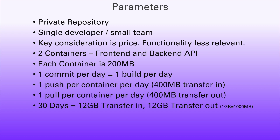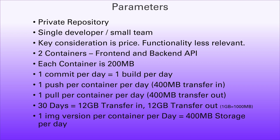Assuming a 30-day period, that gives us 12 gigabytes of transfer in and 12 gigabytes of transfer out — 30 times 400 megabytes. For ease of calculation, I'm assuming one gigabyte equals 1000 megabytes. Creating a build every day also means a different container version per day, so two containers at 400 megabytes across 30 days equates to roughly 12 gigabytes of storage needed.